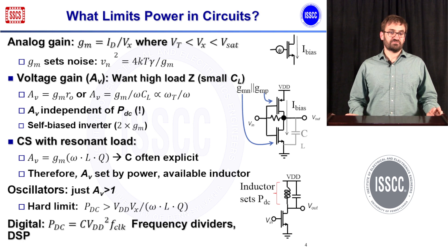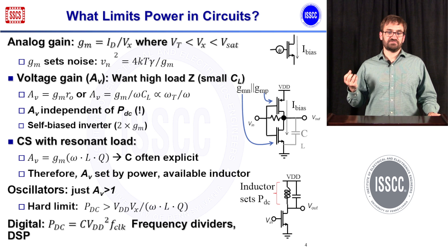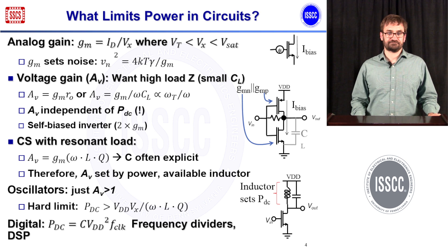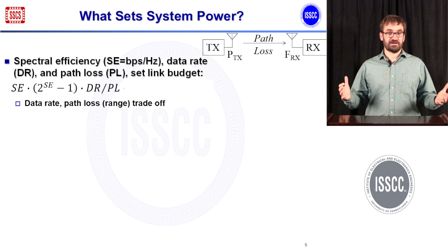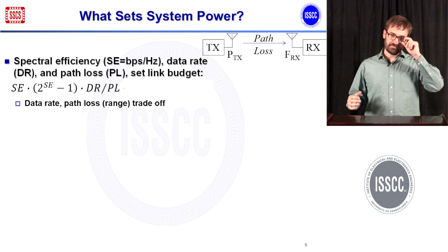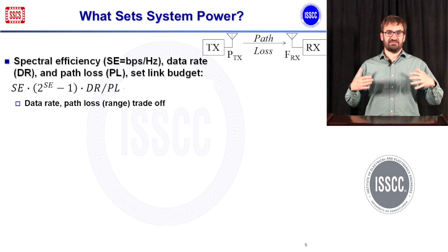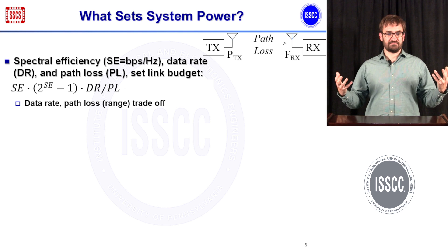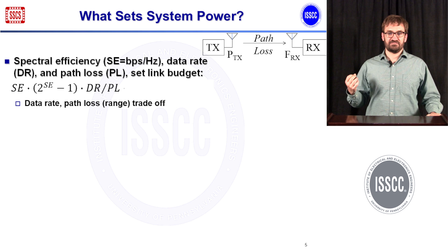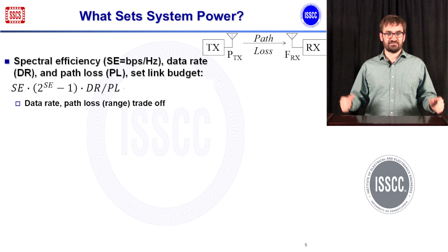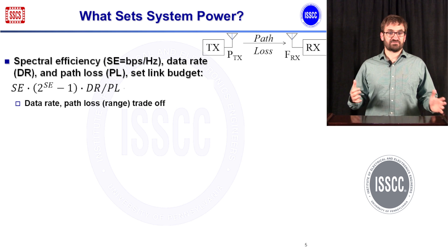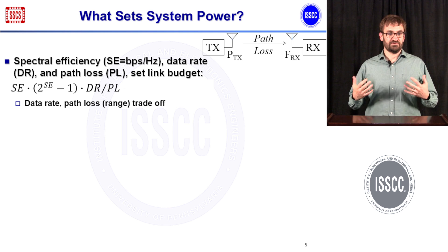Digital circuitry also consumes power, primarily frequency dividers after the oscillator and DSP. The primary things that set system power relate to your link budget: the amount of path loss, the data rate you're sending at, and the spectral efficiency of your system — how many bits per second per hertz you're using.